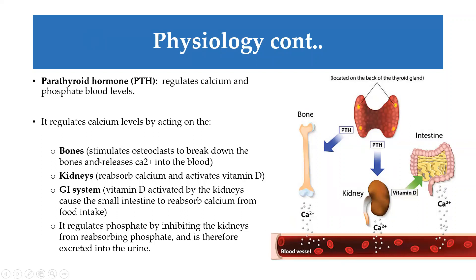Parathyroid hormone increases calcium levels by focusing on three areas. First, at the bones, by stimulating osteoclasts to break down calcium and release it back into the bloodstream. Second, by enhancing reabsorption of calcium from the kidney, preventing it from being excreted. Third, with the help of vitamin D activation, it increases the absorption of calcium from the gut.